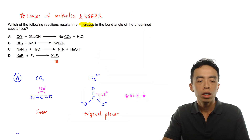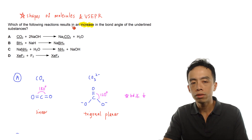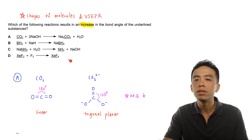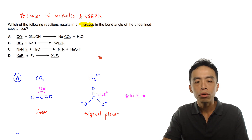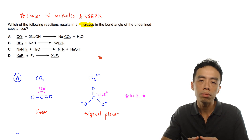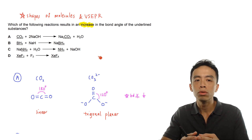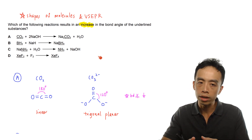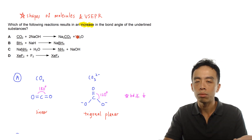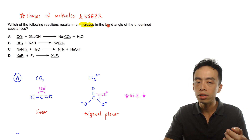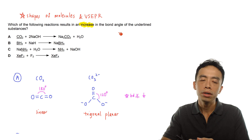Let's take a look at this question: which of the following reactions results in an increase in the bond angle of the underlying substances? We have four options, and all the species are underlined. We will make use of VSEPR theory to deduce the shape of the molecule or species involved, and from there deduce the bond angle from the reactant to the product species — whether there is an increase or decrease in the bond angle.